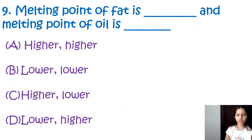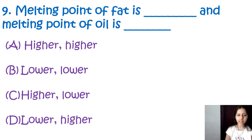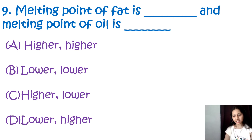Question number 9: Melting point of fat is blank and melting point of oil is blank. Options are: higher/higher, lower/lower, higher/lower, and lower/higher. The correct option is C, that is higher and lower.